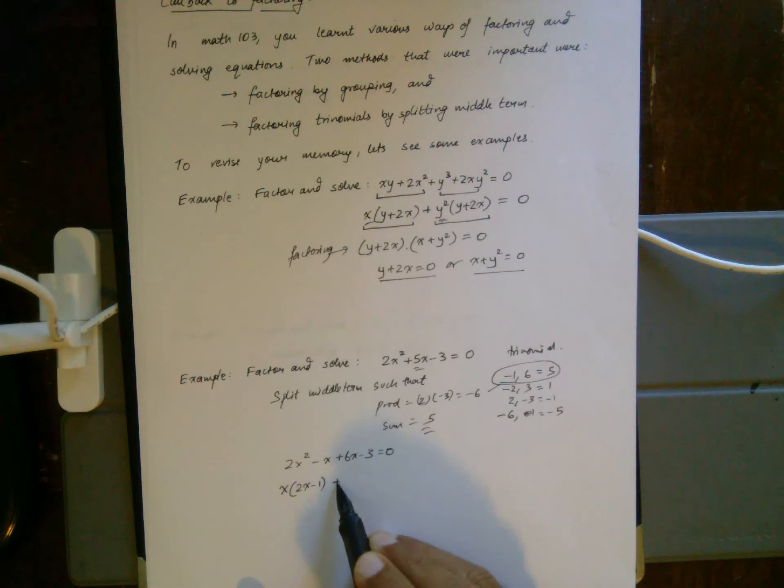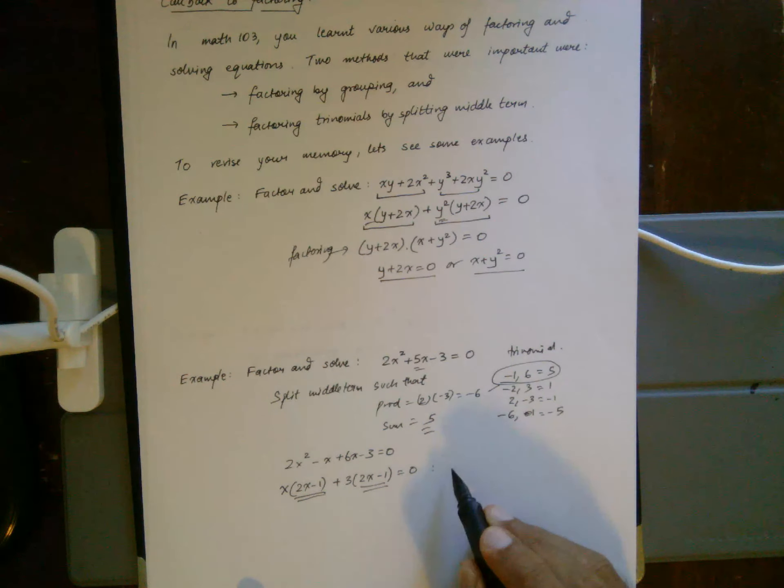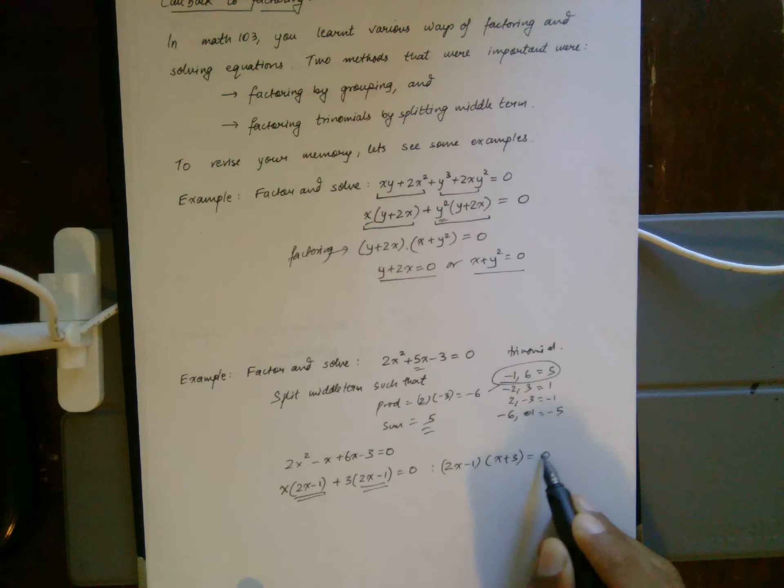Both of which have 2x minus 1 common, so this gives me (2x minus 1)(x plus 3) equals 0, giving me 2x minus 1 equals 0 and x plus 3 equals 0.